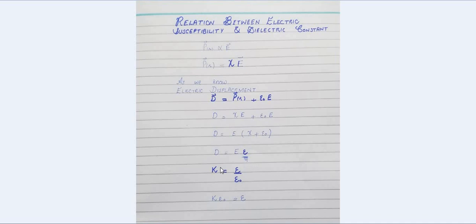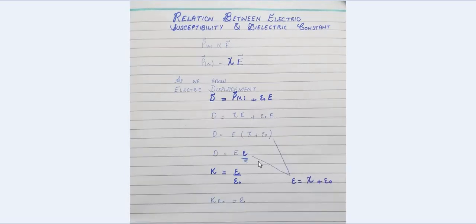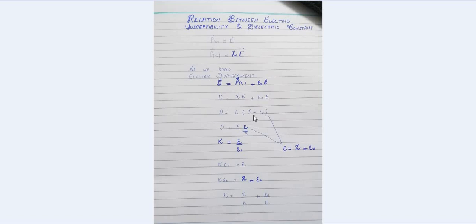Now, the dielectric constant k is defined as the ratio between the permittivity of the material and the permittivity of free space. So we can rearrange to get the permittivity of the material as k times ε₀. Substituting this into our expression, we place that value in, giving us: k·ε₀ = χ + ε₀.